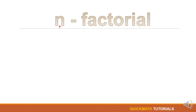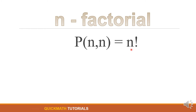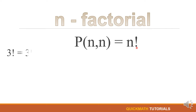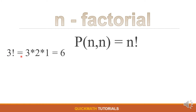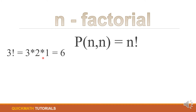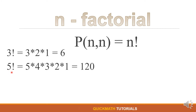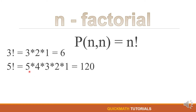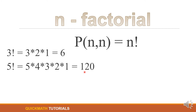Thus, there are 720 possible ways of arranging the 10 runners as first, second, or third placers. Now let's have our second formula, which is the n factorial. The formula is just equal to n factorial. For example, 3 factorial: we multiply from 3 down to 1, so 3 times 2 times 1, which is equal to 6. Another example is 5 factorial: 5 times 4 times 3 times 2 times 1, which is equal to 120.